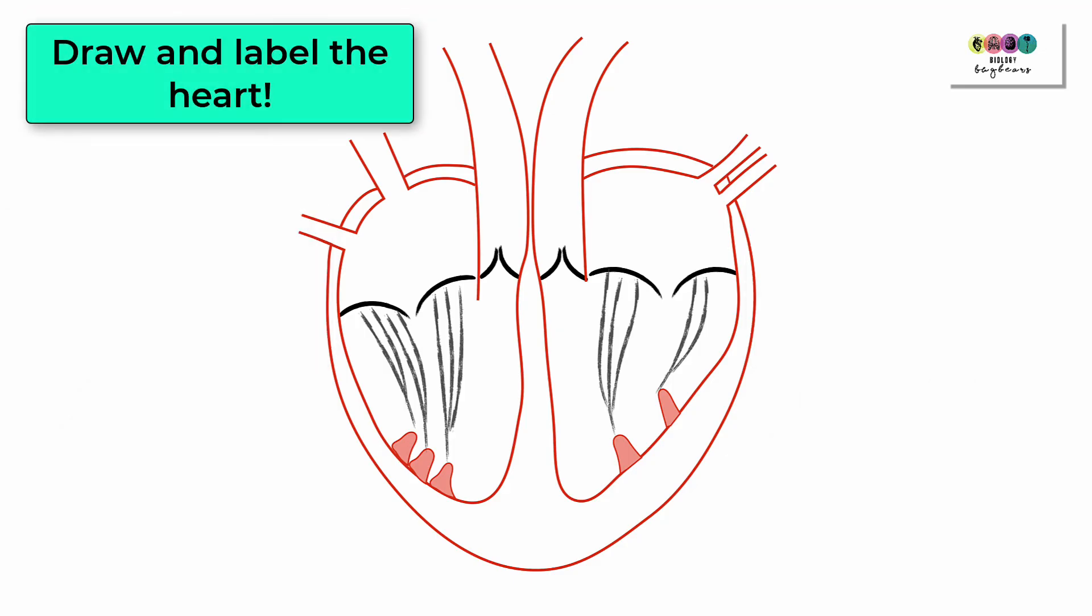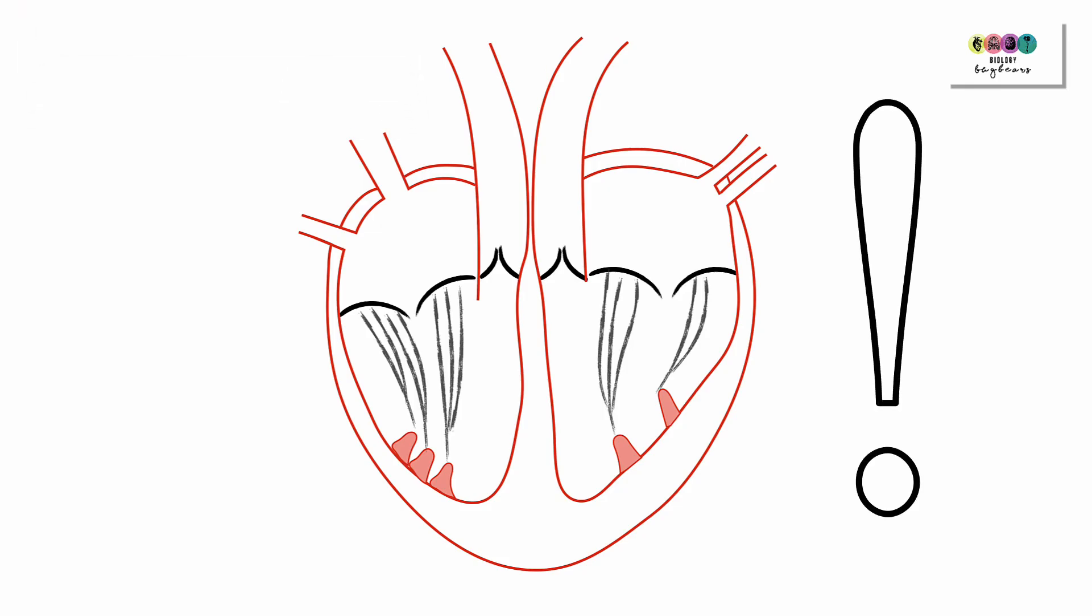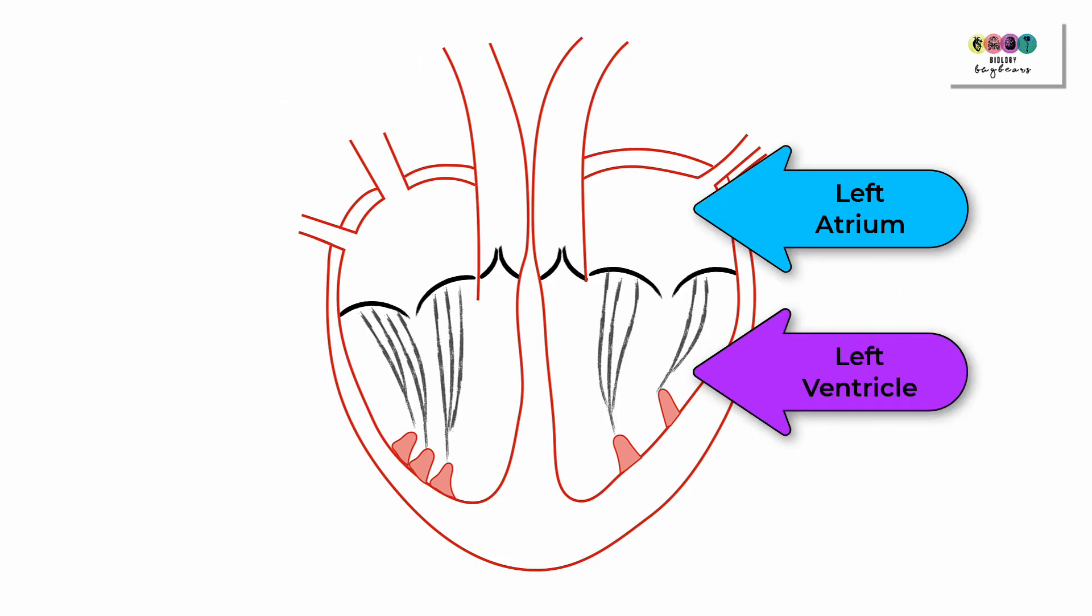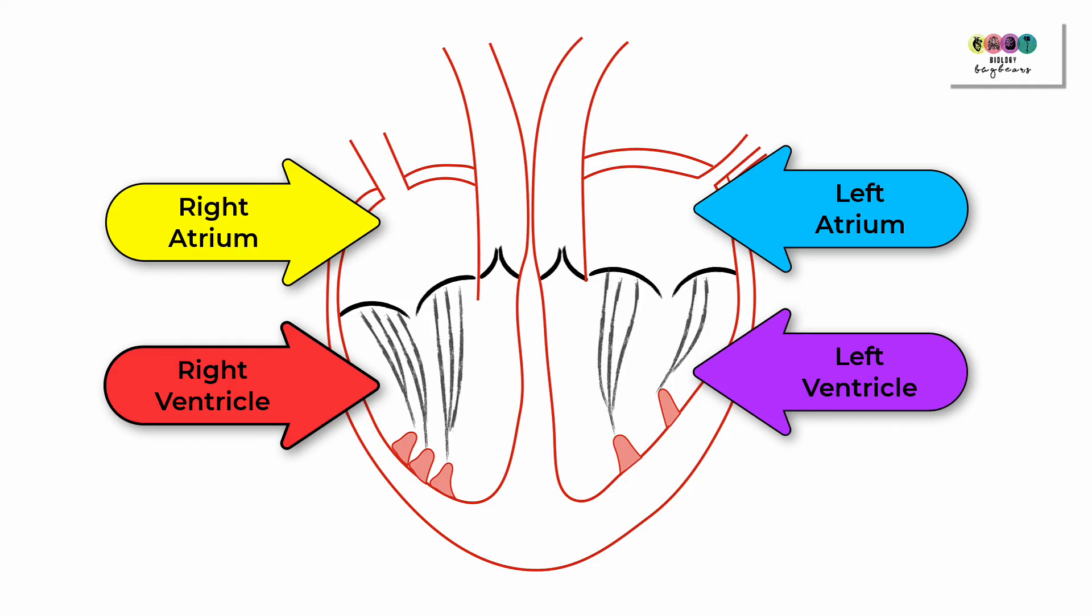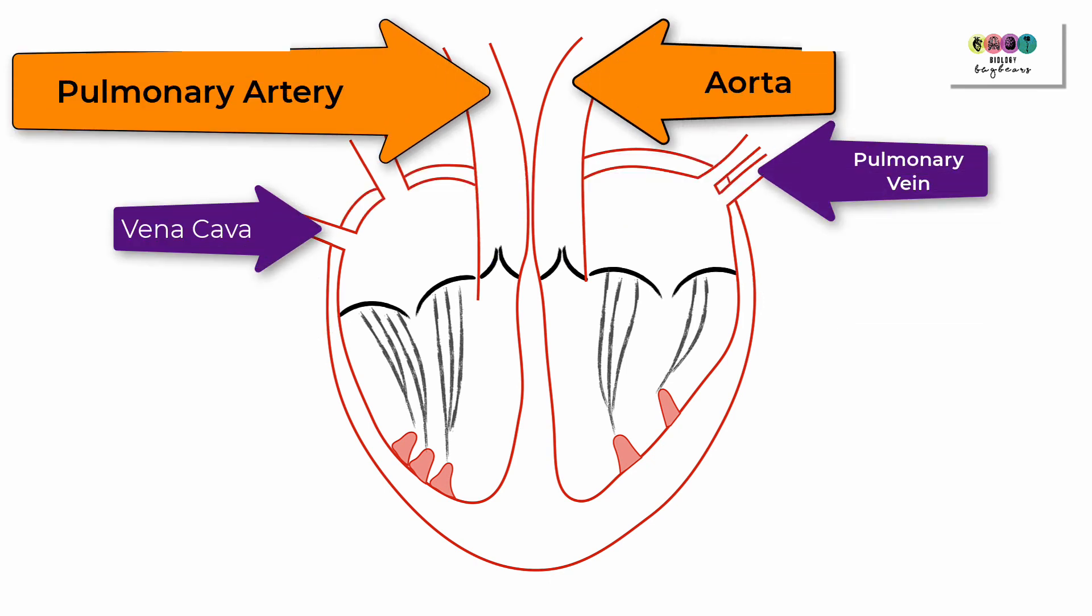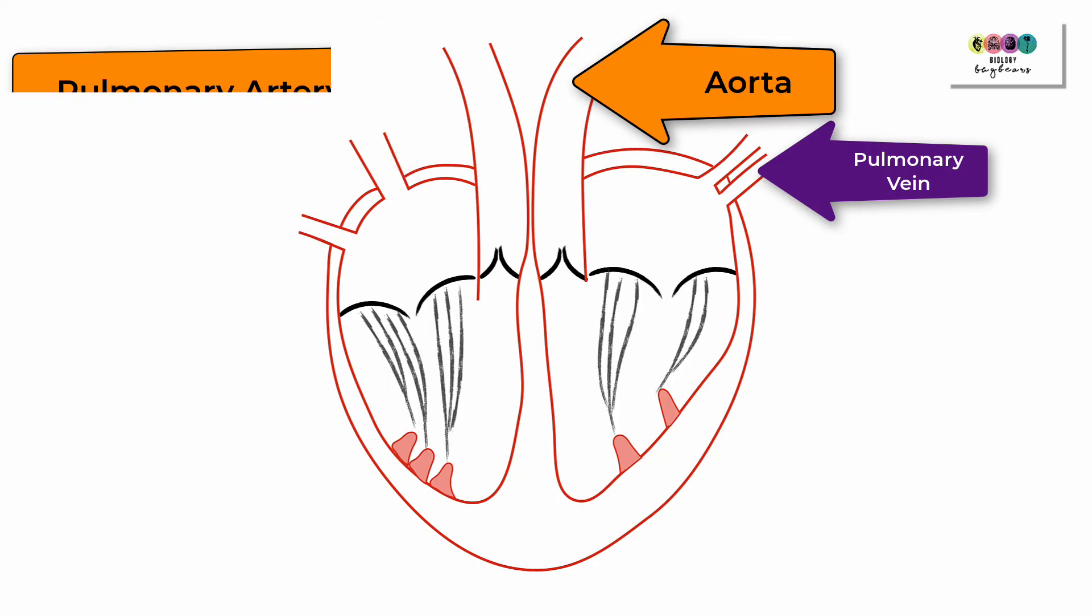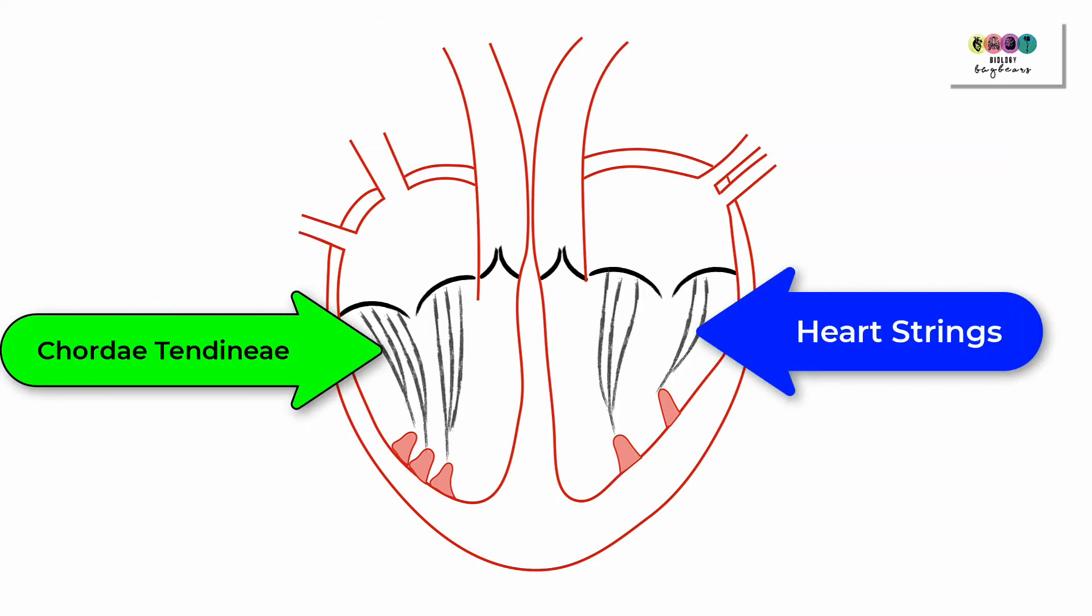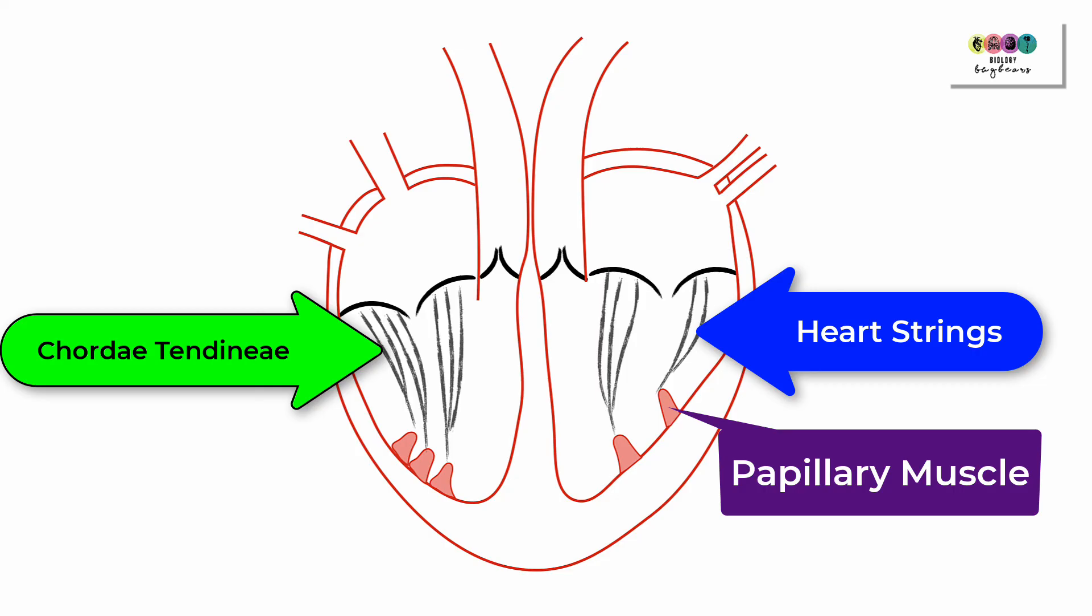You need to know how to draw the heart and to label it. This is asked often in the exam papers. Start with the chambers—the atria and then the ventricles. From there, lead into the valves: the bicuspid valve, the tricuspid valve and the semilunar valves, followed by the blood vessels. Don't forget to also include the chordae tendiniae, the heartstrings, and very important, the papillary muscles to which they are attached.